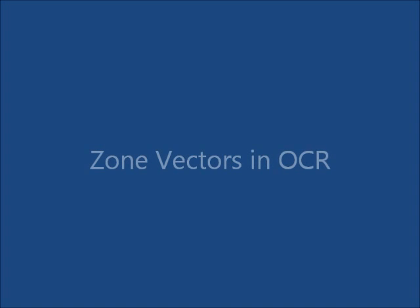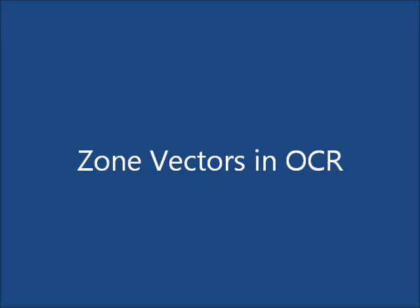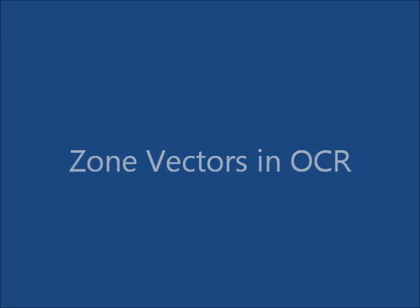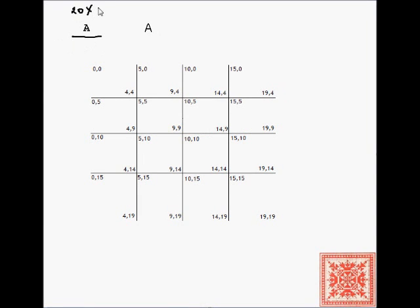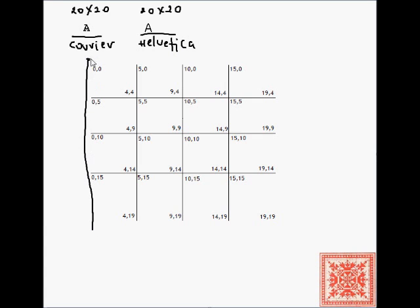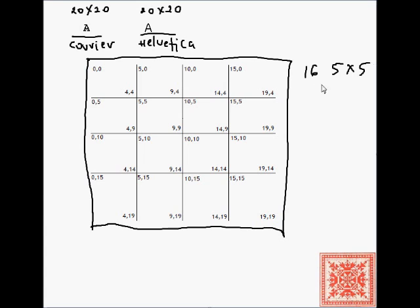So let's consider an example of zone vector matches in how zone vectors can be used in optical character recognition. So let's suppose in this project, we will be dealing with character images, bitmaps of 20 by 20 pixels, and two different fonts, courier and helvetica. And the links will be provided below the screencast that you can download to archives of these images. So each bitmap will be divided into 16 5 by 5 pixel zones.